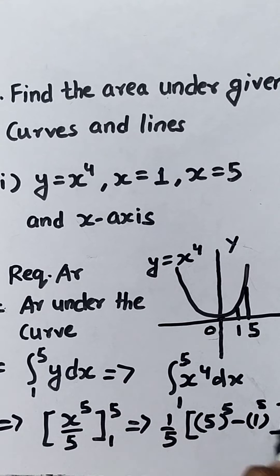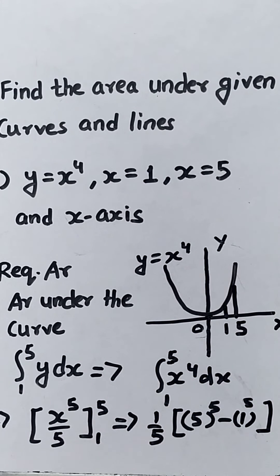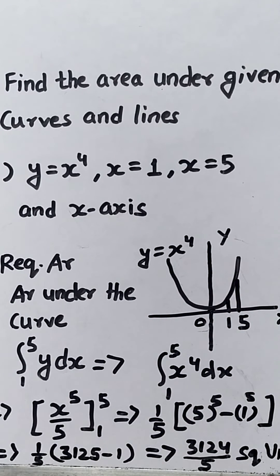5 to the power 5 is 3125, minus 1 to the power 5 is 1. So 3125 minus 1 equals 3124, times 1 upon 5.